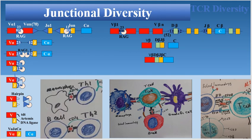In this video lecture I will be talking on junctional diversity. Junctional diversity is beneficial for creating a diverse array of different TCRs required for recognition of around 10 to the power of 16 pathogen antigens.